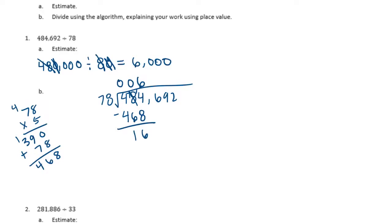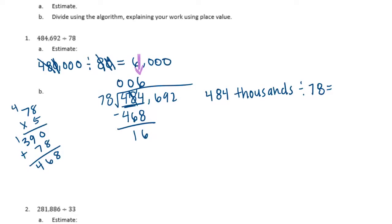What we actually did there was 484,000 divided by 78. We got 6,000. Notice this 6 is in the thousands place, because we still have the hundreds, tens, and ones. So that was equal to 6,000.